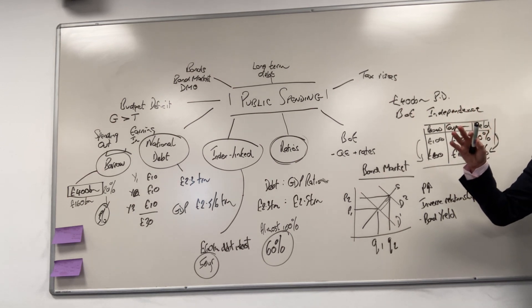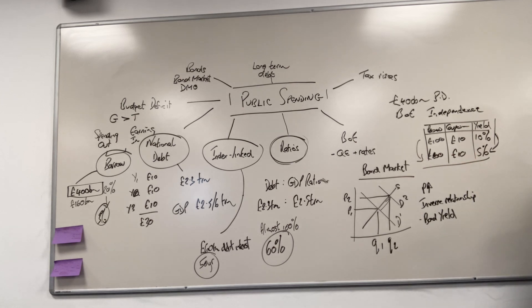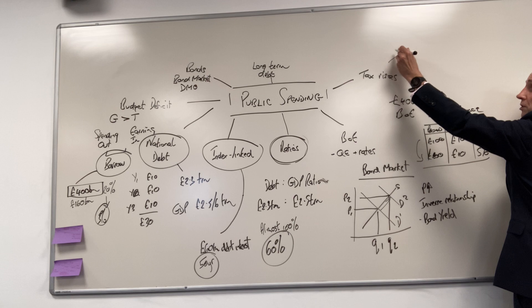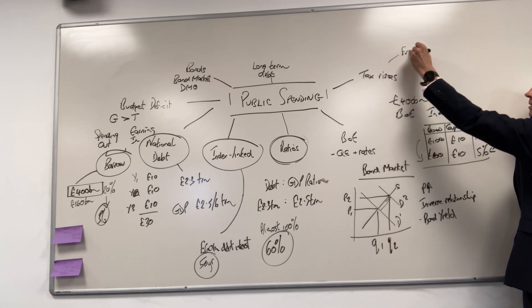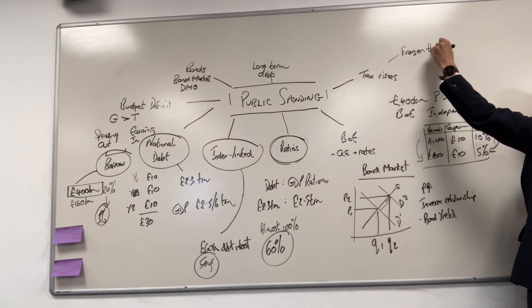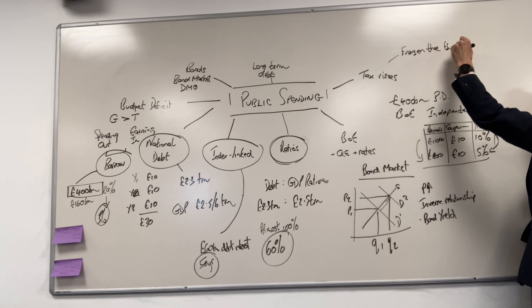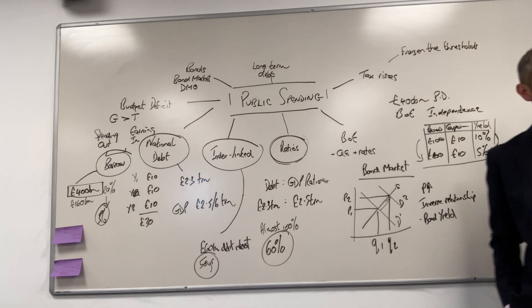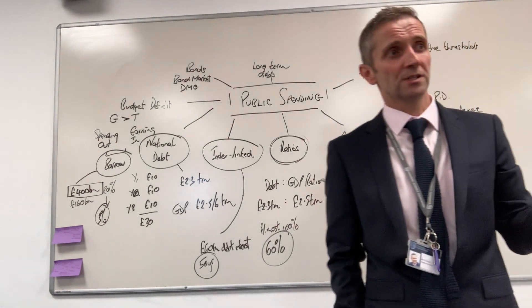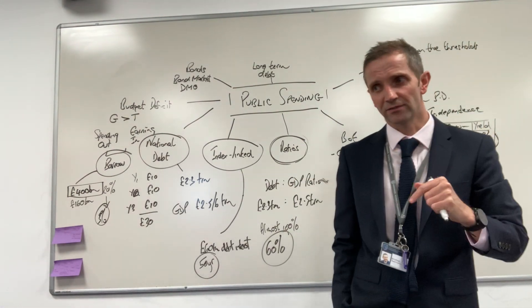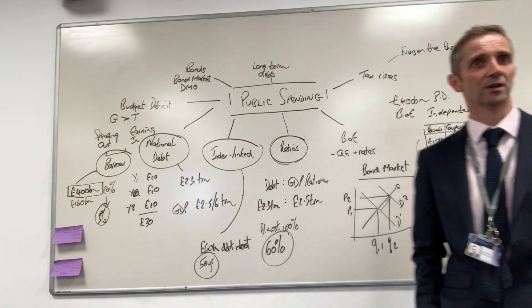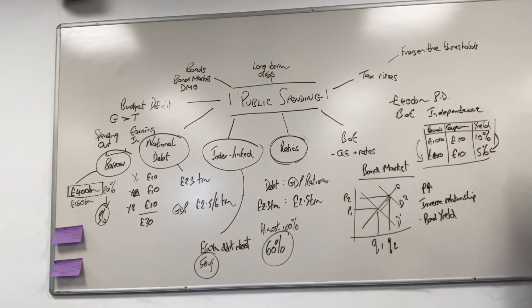But longer term, what's going to happen? The debt, we will have to start to address it. Rishi's already done that. What's he done? He has frozen the thresholds, meaning you're going to get more people, it's that fiscal drag we talked about in the inflation video. You're going to get more people dragged into the higher tax brackets, and the tax take will obviously go up as a consequence.